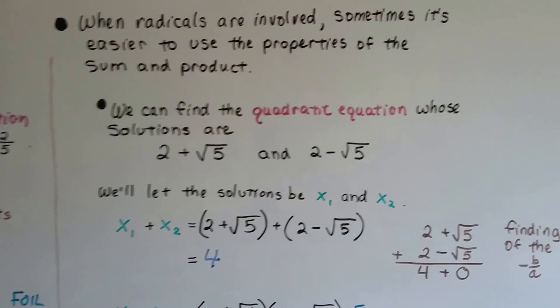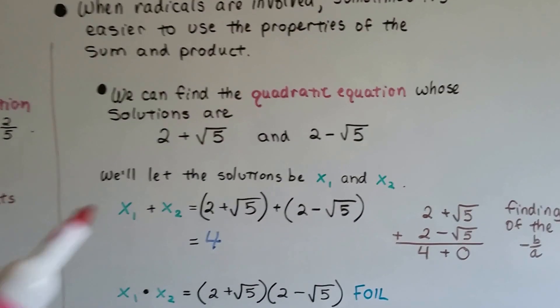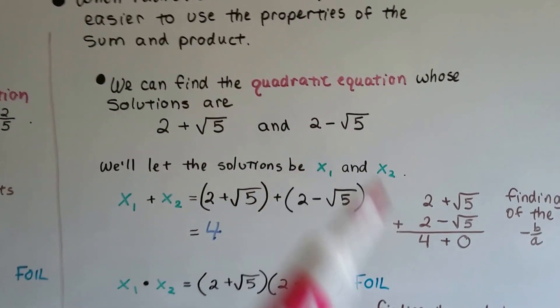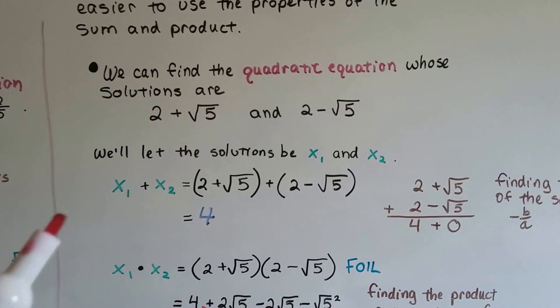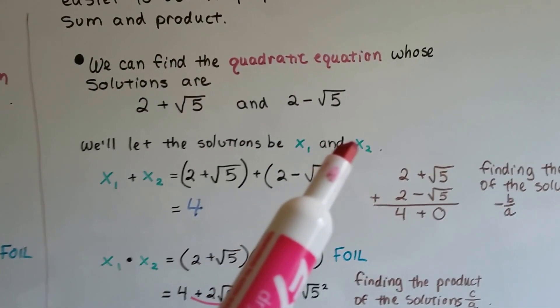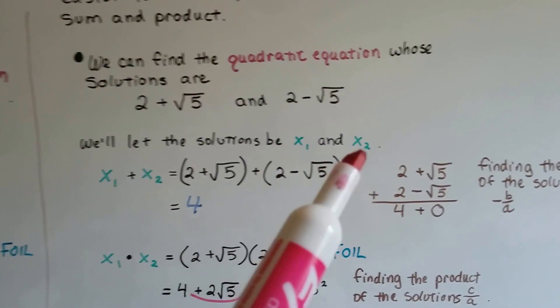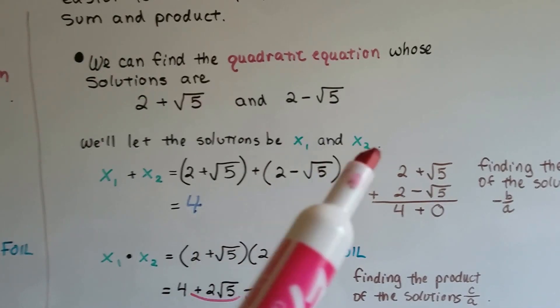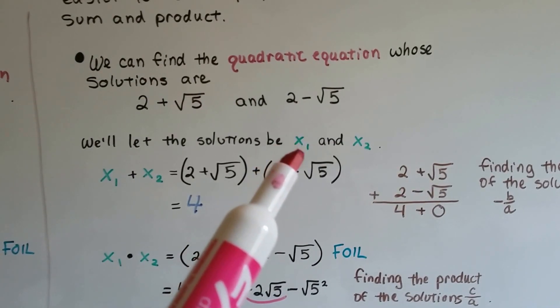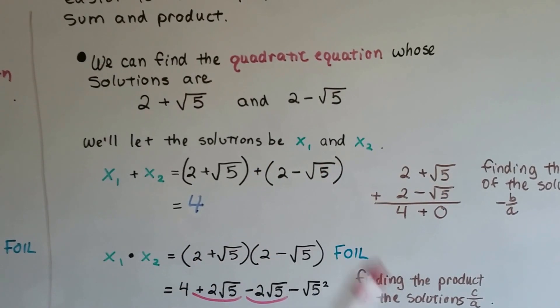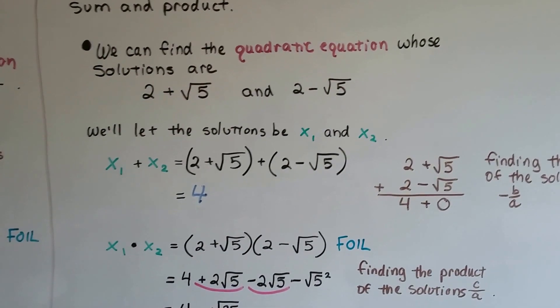We can find the quadratic equation whose solutions are 2 + √5 and 2 - √5. We're going to let the solutions be x₁ and x₂. Remember we talked about that several times? This is a subscript, so that tells us it's the first one and that's the second one. We saw that in slope formula and stuff.